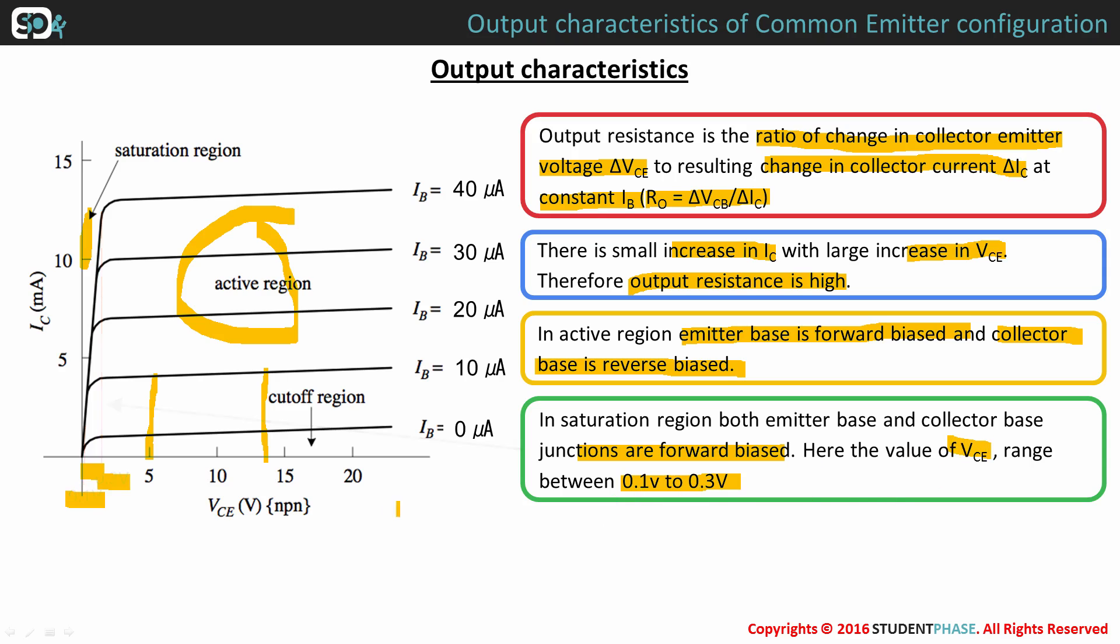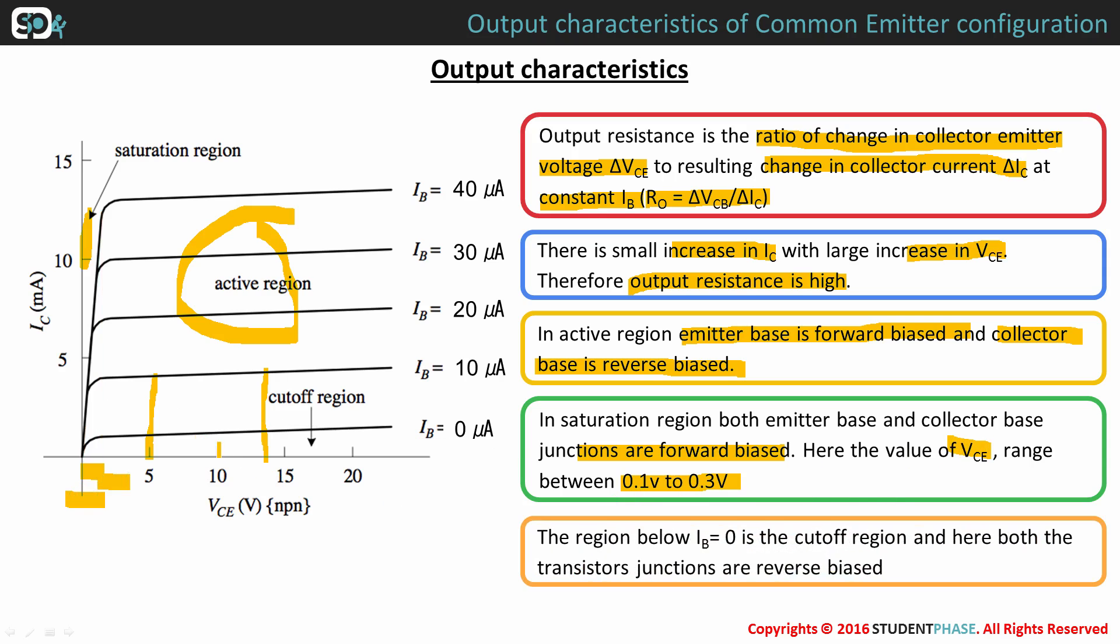Region below IB equals 0, which is this, is called cutoff region, and here both the transistor junctions are said to be reverse biased.